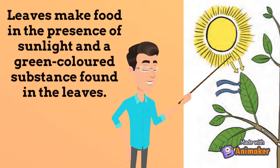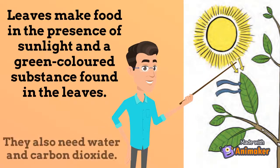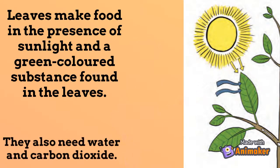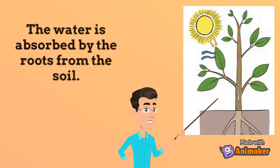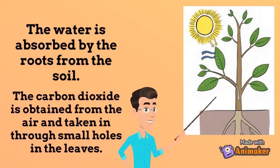The leaves make food in the presence of sunlight and a green-colored substance found in the leaves. They also need water and carbon dioxide. The water is absorbed by the roots from the soil. The carbon dioxide is obtained from the air and taken in through small holes in the leaves.